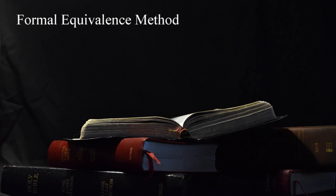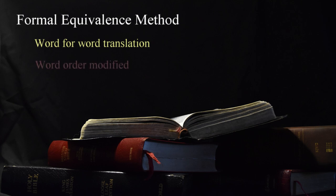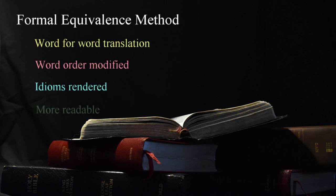A second method of translating is referred to as the formal equivalence method. This is a word-for-word translation, but the word order has been modified so that it can be understood by readers in the target language. Every effort is used to preserve the exact wording and meaning of the original text. Idiomatic phrases are rendered to convey the same meaning as in the original language, or as closely as possible. These translations are the closest to a literal translation while being more readable and understandable.